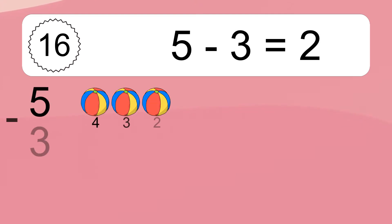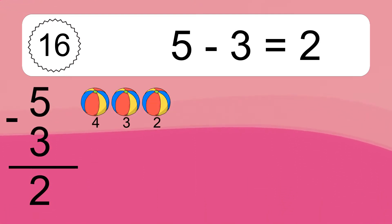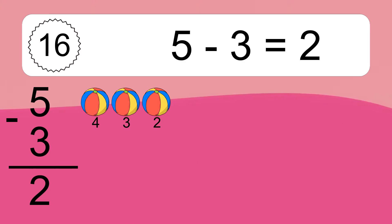5 minus 3 equals what? 5 minus 3 equals 2. Let's count it: 4, 3, 2.